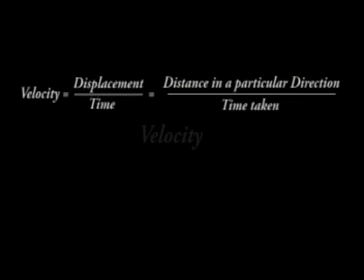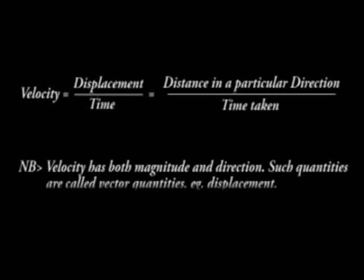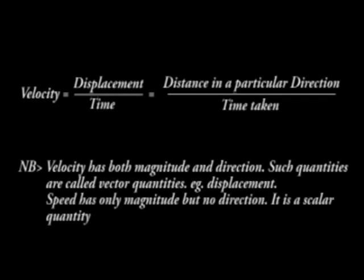Velocity. When the distance moved by an object is in a specified direction, the speed is called velocity. Velocity is displacement over time, that is distance in a particular direction over time taken. Note that velocity has both magnitude and direction. Such quantities are called vector quantities.